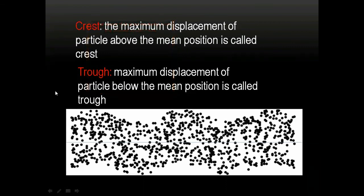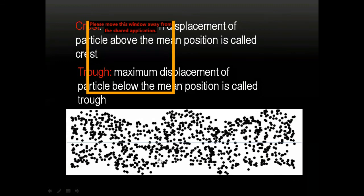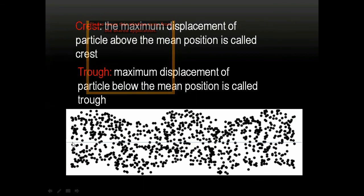As transverse waves move, they form a repeating pattern of crest, trough, crest, trough. The particles of the medium are only moving up and down about their mean position — they are not traveling with the wave. This is how transverse waves propagate.